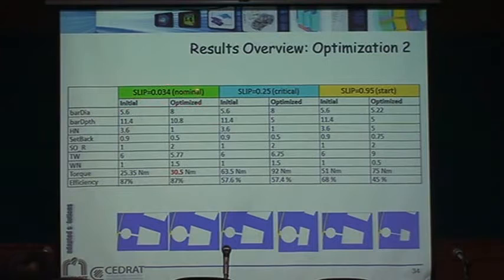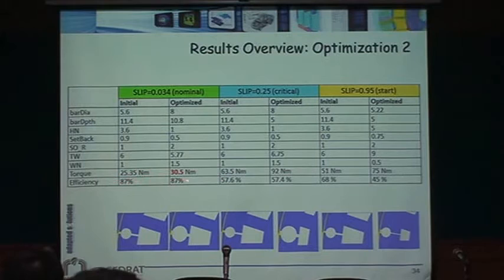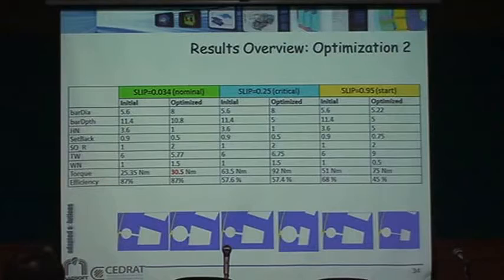For the multi-torque optimization at slip values of 0.034 (rated), 0.25 (breakaway), and 0.95 (near start), with efficiency maintained at rated speed — you can see the optimized slot shapes found. One case was not quite able to maintain the efficiency constraint, but the different optimal slot geometries are clearly visible.